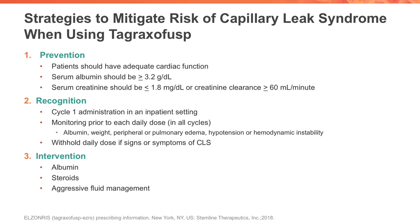When using tagraxafusp for BPDCN, there are several strategies to mitigate the risk of capillary leak syndrome, including prevention, recognition, and intervention. For prevention, selection criteria identify patients who perhaps should not receive tagraxafusp due to increased risk. Patients should have adequate cardiac function as measured by a normal ejection fraction, a serum albumin greater than or equal to 3.2 g/dL, and serum creatinine less than or equal to 1.8 mg/dL or a creatinine clearance greater than 60 mL/min.